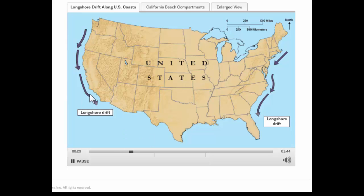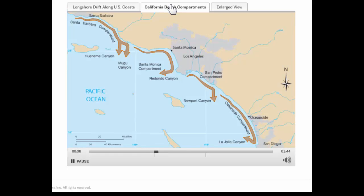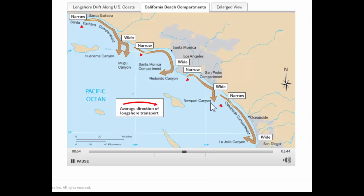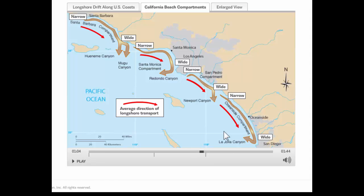Zooming in on Southern California, the sand moves south — or southeast due to the orientation of the coastline — by longshore drift. But the sand doesn't travel south forever. It ends up leaving the beach where it drains off down areas called submarine canyons, which you can see labeled here: Redondo Canyon, Newport Canyon, and La Jolla Canyon at the bottom of the image. La Jolla Canyon is taking all the sand from what's called the Oceanside Beach Compartment. A beach compartment is an area in which sand arrives at the beach, moves along the beach, and eventually leaves down a submarine canyon.